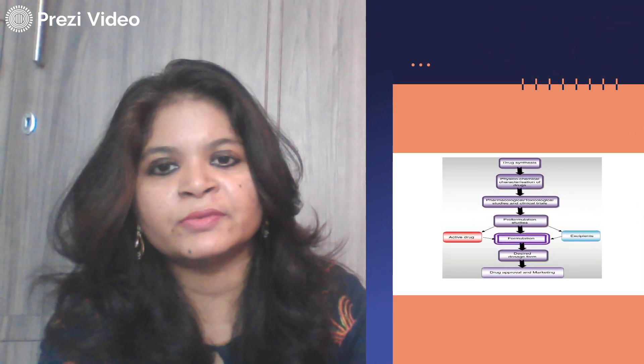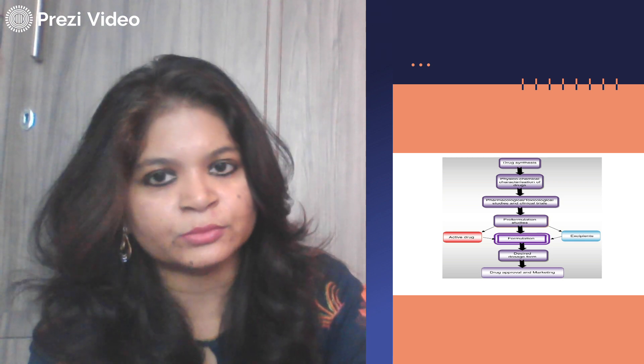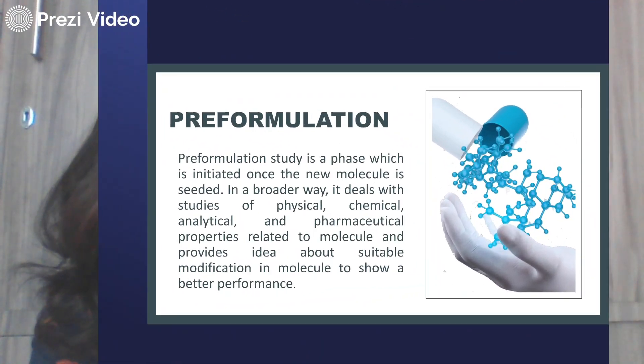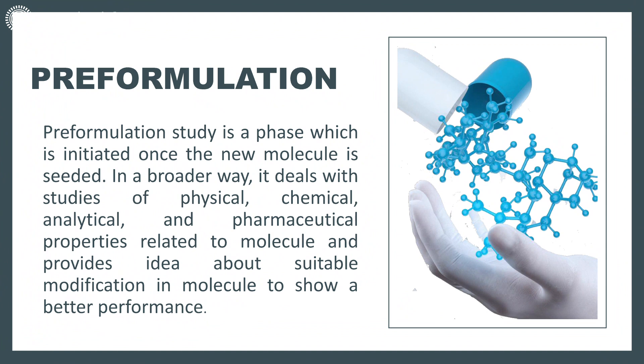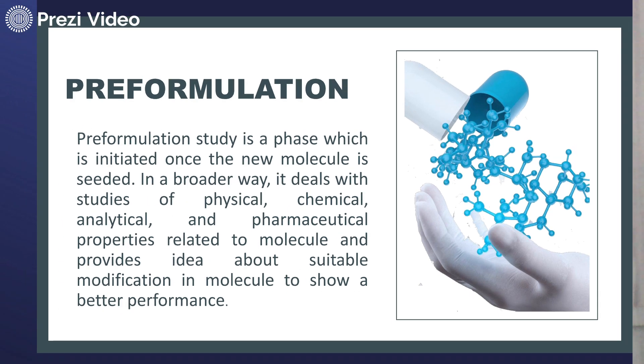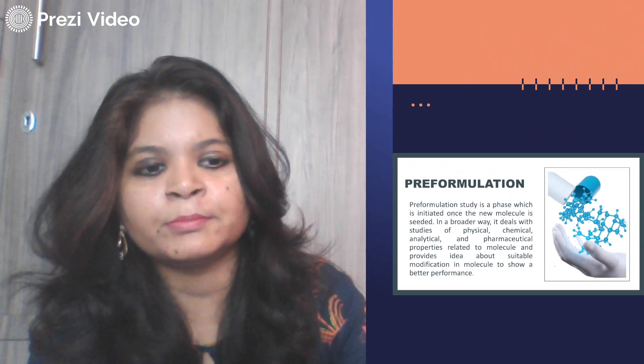Once you have a new chemical entity you can go for pre-formulation studies, and if you have an existing generic drug you can again go for pre-formulation studies if you wish to develop it into another dosage form — for example, from tablets to capsules or from capsules to injectable dosage forms. Every time you go for another dosage form you need to carry out pre-formulation studies. In a broader way, pre-formulation deals with the study of physical, chemical, analytical, and pharmaceutical properties related to the molecule, and provides ideas about suitable modification of the molecule to see better performance.